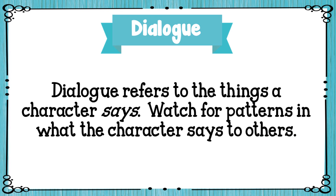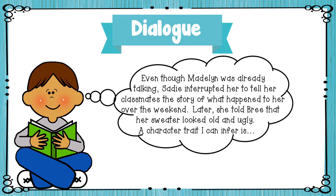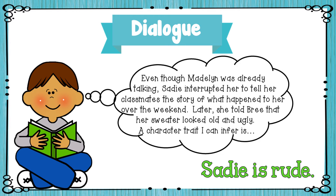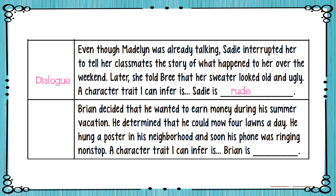The third way we can infer a character trait is through dialogue — the things a character says. Watch for patterns in what the character says to others. Even though Madeline was already talking, Sadie interrupted her to tell her classmates the story of what happened to her over the weekend. Later, she told Bree that her sweater looked old and ugly. A character trait I can infer is that Sadie is rude. On the third box, place dialogue, because we inferred from the way Sadie was talking that she is rude.